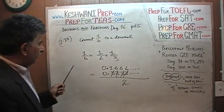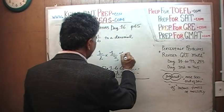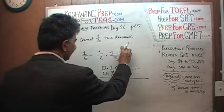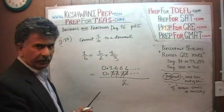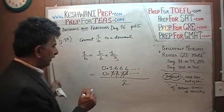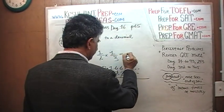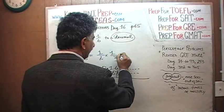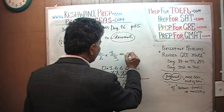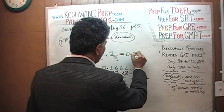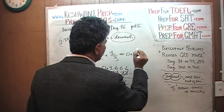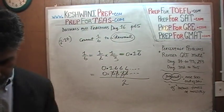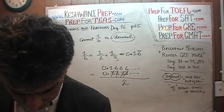So in decimal, 1 sixth is approximately — well, we can write the precise answer. The precise decimal is exactly equal to 0.16 with a bar only over the 6. That means 6 is going to go on forever and ever — it never ends.